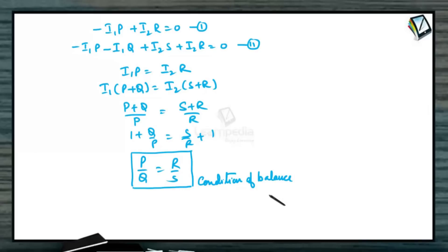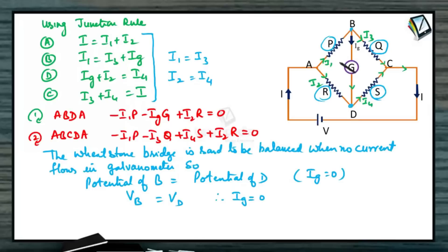When Wheatstone bridge condition is satisfied, remember P and Q resistance will come in series, R and S resistance will come into series. Or if we can join this point B and D because they are at the same potential, P and R are said to be in parallel, Q and S are said to be in parallel. By adding both, we can calculate the equivalent resistance. If a network is given, we try to see whether it is satisfying Wheatstone bridge condition or not, such that P by Q equals R by S. If the Wheatstone bridge condition is satisfied, then immediately we can take P and R in parallel, Q and S in parallel and add them in series.